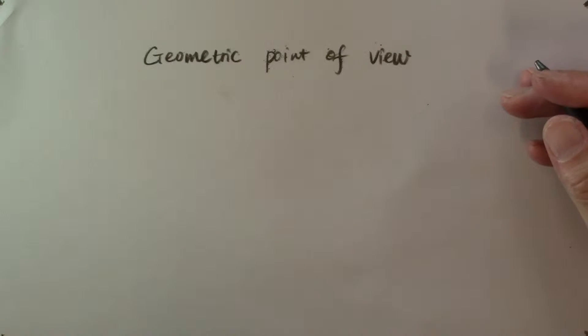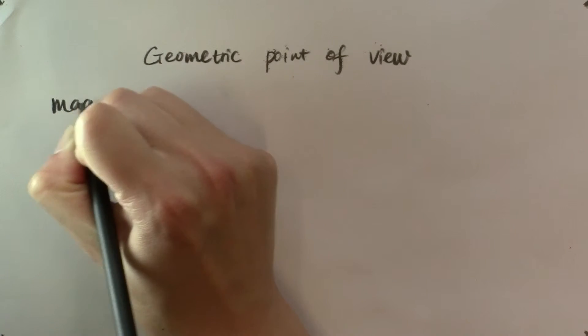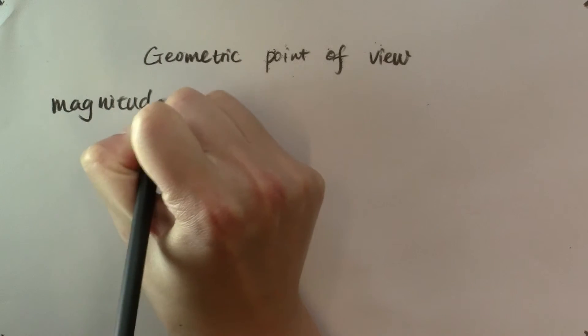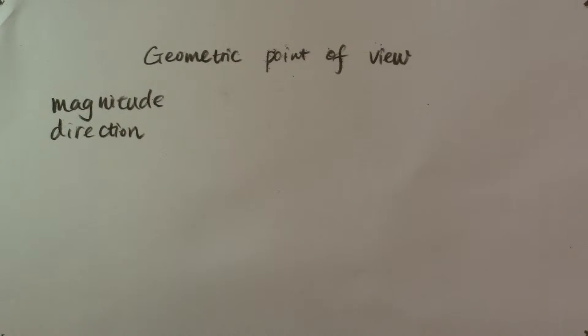You might also have learned in physics classes that a vector is a quantity that has to be described by not only a magnitude, but also a direction. For example, the speed of wind, the acceleration of a rocket, and the force applied on an object are all vectors because both their magnitude and direction matter.